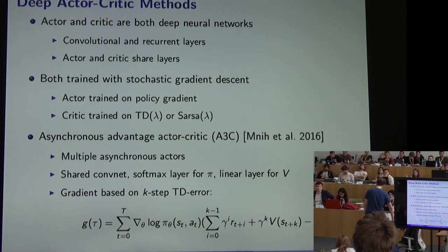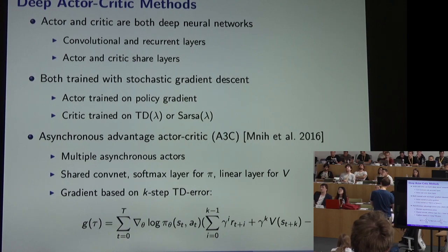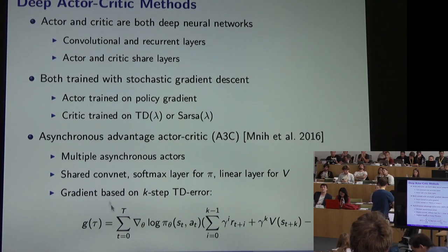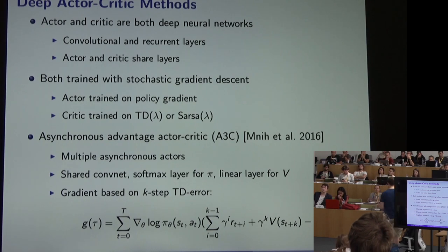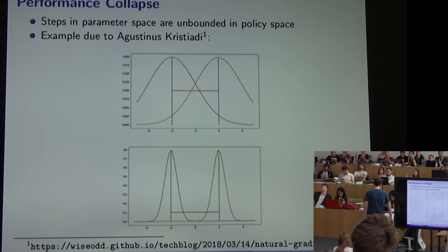One of the most well-known deep actor-critic methods is A3C — Asynchronous Advantage Actor-Critic — where multiple actors are trained asynchronously in parallel. The actor and critic share a convolutional neural network, with a softmax layer for the policy and a linear layer for the value function. The original method uses k-step bootstrapping rather than generalized advantage estimation to construct the policy gradient estimate.